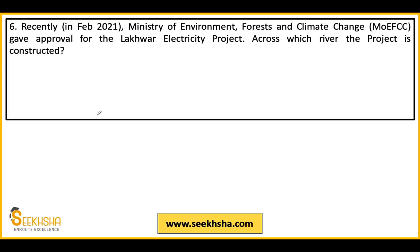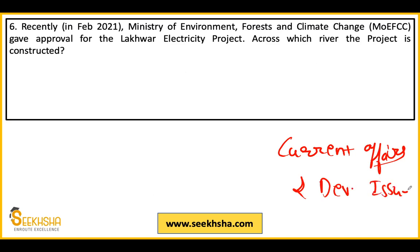The sixth question: recently the Ministry of Environment, Forest and Climate Change gave approval for an electricity project on a river. Some may say this is geography, but this is current affairs and development issue — a country's development is current affairs. The answer here is option C: the project is on the Yamuna river.